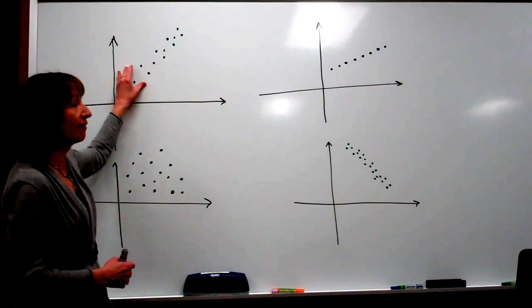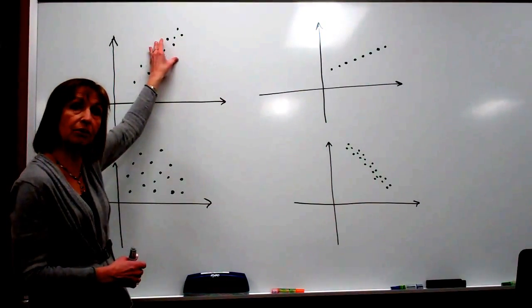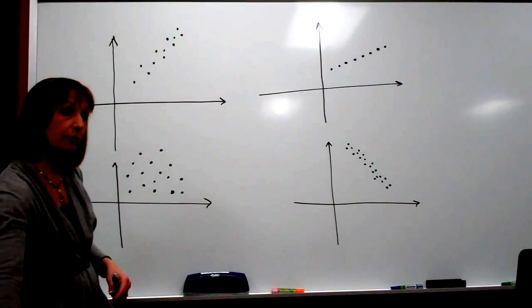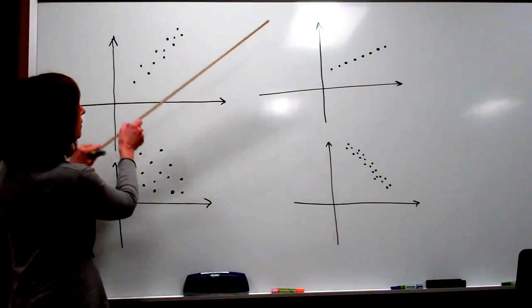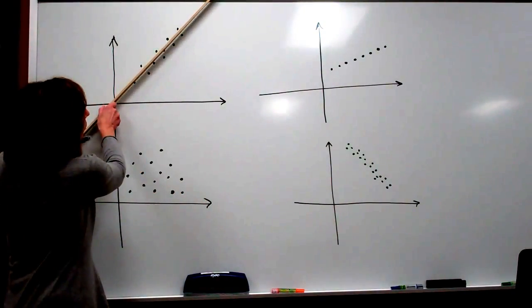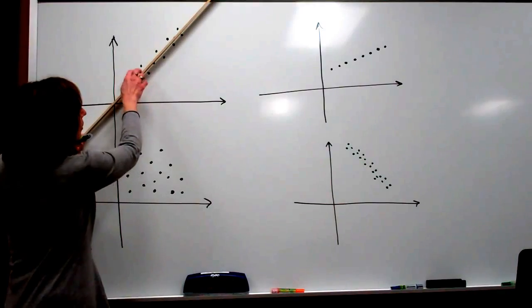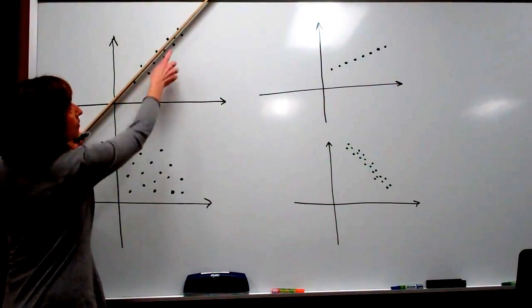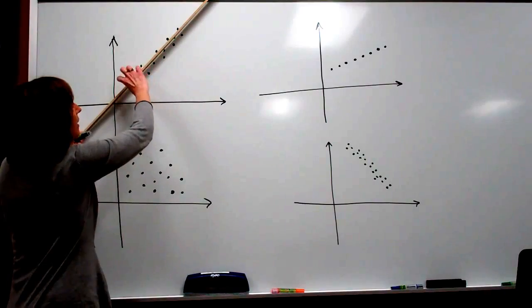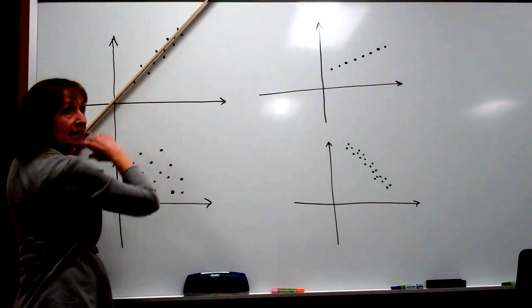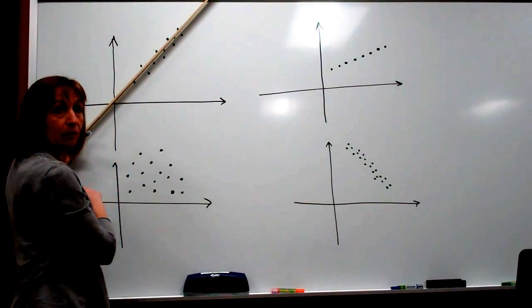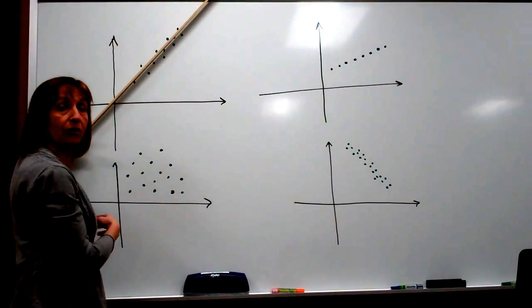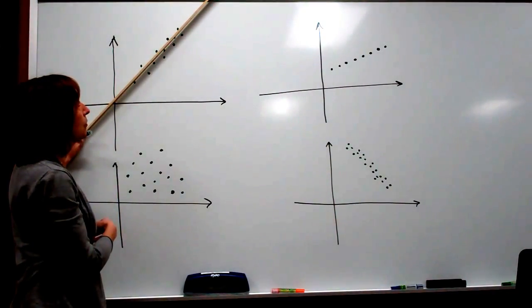So here it looks like we have a positive correlation between these variables, and it probably could be fit by a line. When I try to place a line so that I have about the same number of data values above the line as below, and they have a pretty consistent bandwidth around them, it looks like I can get a pretty decent linear correlation model between those two variables.